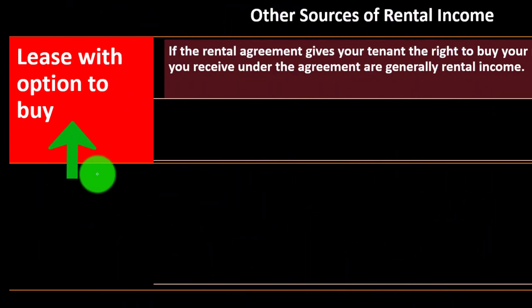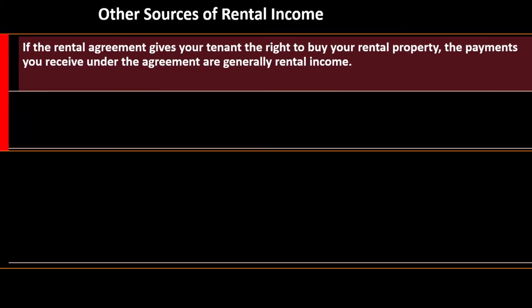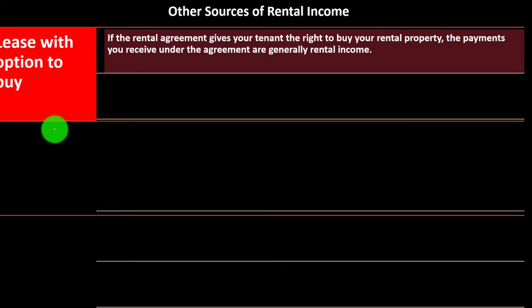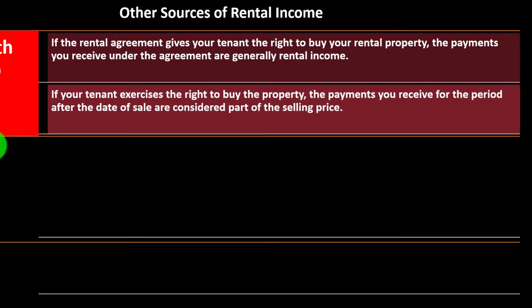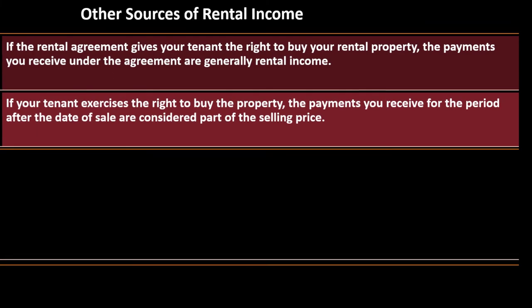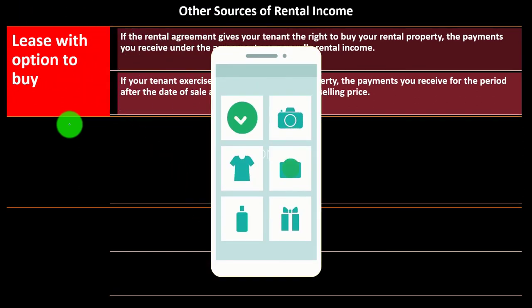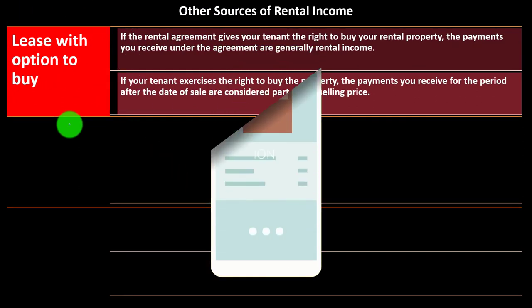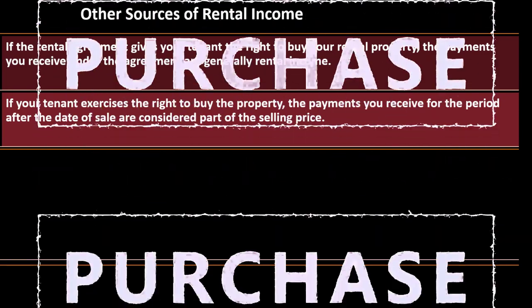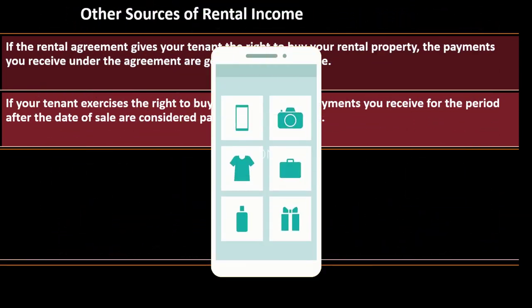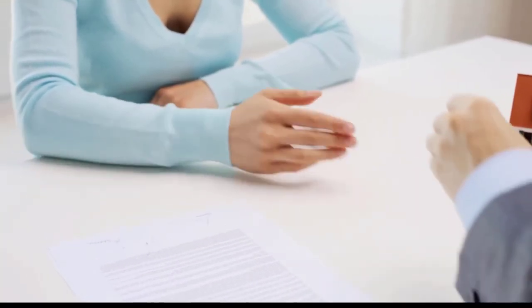In this case, if the rental agreement gives the tenant the right to buy your rental property, the payments you receive under the agreement are generally rental income. If your tenant exercises the right to buy the property, the payments you receive for the period after the date of the sale are considered part of the selling price. The issue is how we categorize that income — is it part of the purchase price or part of the rental income — especially if the option to buy hasn't been exercised yet.